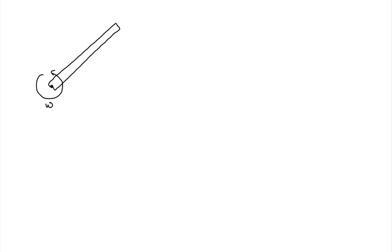Let's start off with a sketch of this conductor — a bar rotating in a uniform magnetic field. Here is our bar, with the pivot point at the bottom end. The bar is rotating counterclockwise with an angular speed of omega, and it has length L. There is a uniform magnetic field through which this bar is rotating, perpendicular to the plane of rotation — indicated by uniformly spaced dots, meaning the field is coming straight towards us out of the screen.